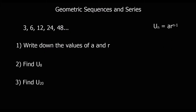Here's another geometric sequence: 3, 6, 12, 24, 48. The question says write down the values of a and r. So a is the first term of the sequence, so a must be 3. r is the common ratio — what do you multiply 3 by to get 6, or 6 by to get 12? So r is 2, because you multiply by 2 every time.